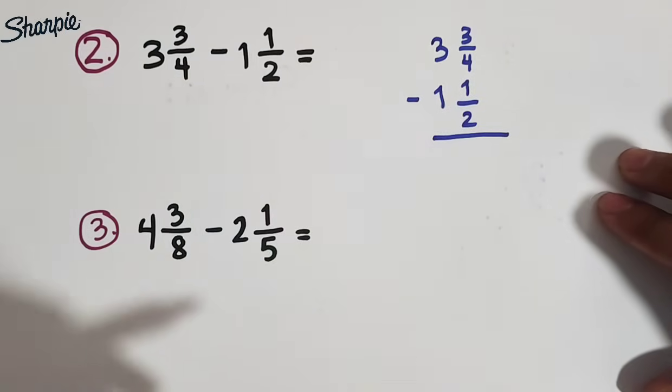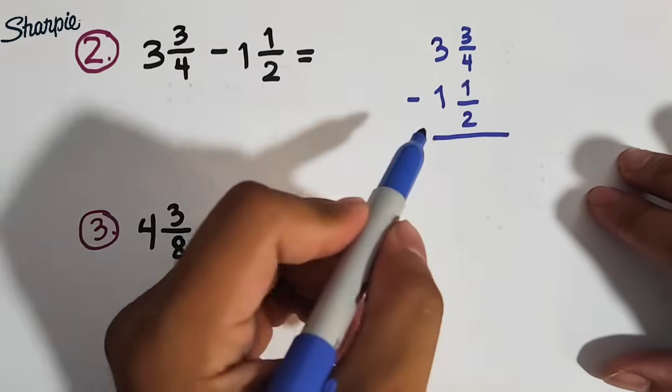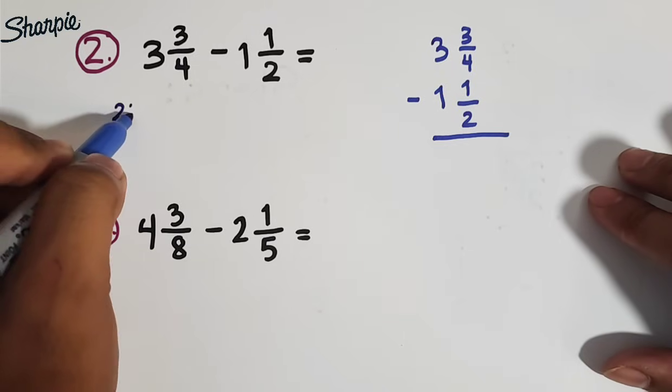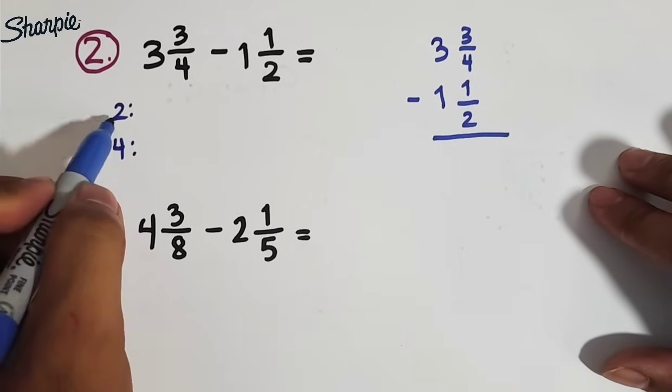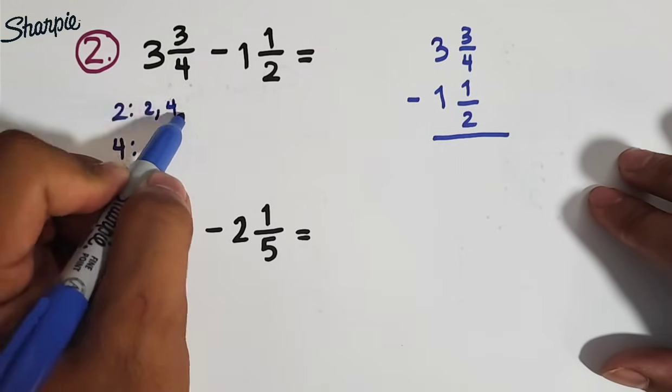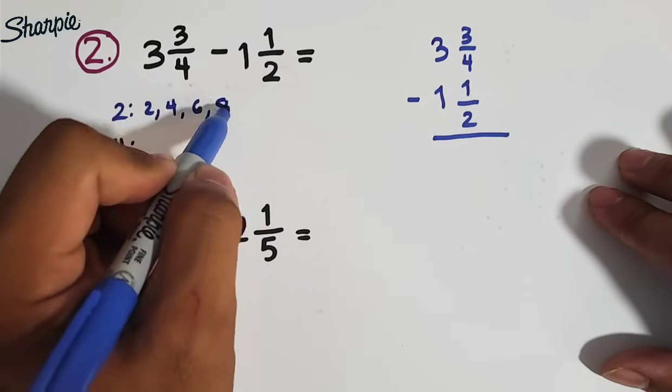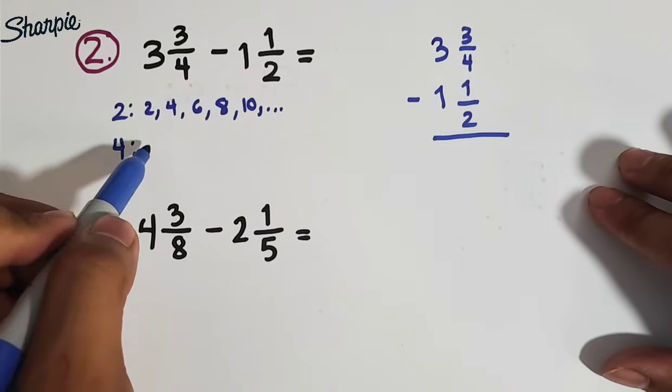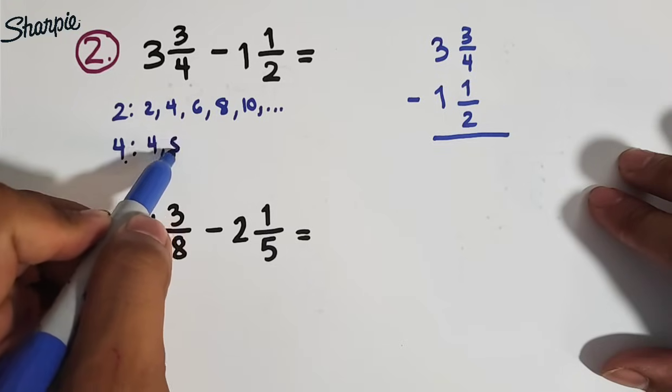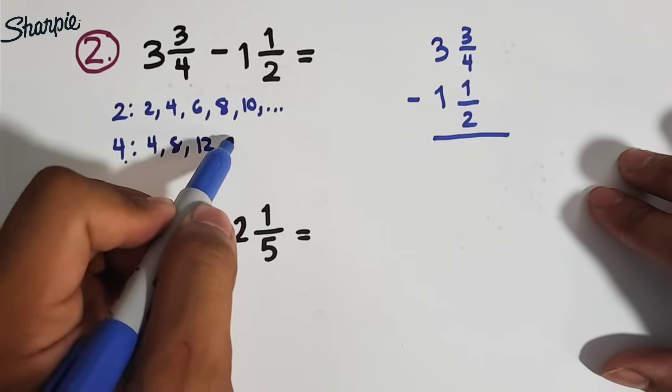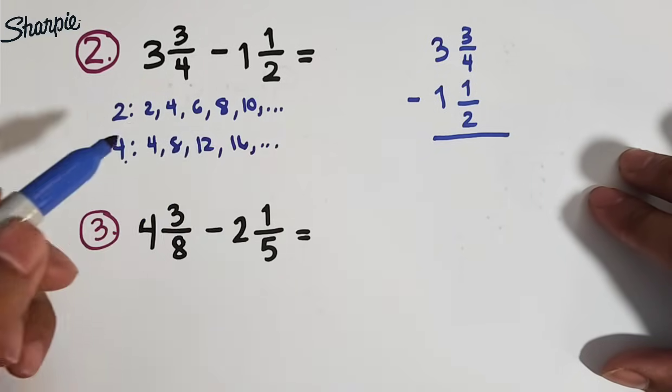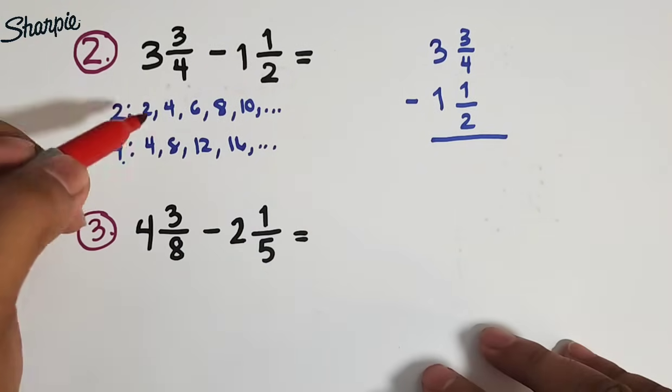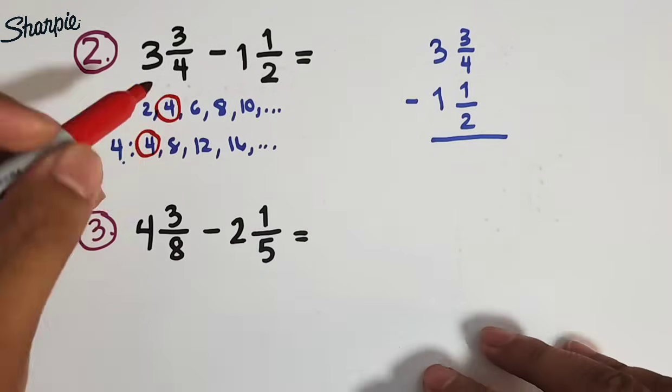So, we will find the LCD of 4 and 2 by finding the least common multiple. So, we have 2 and 4. 2, 4, 6, 8, 10, and so on. And for 4, the multiples are 4, 8, 12, 16, and so on. And as you can see, we already have the multiples of 2 and 4, or the least common multiple, which is equal to 4.